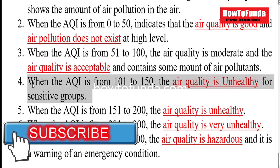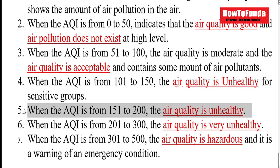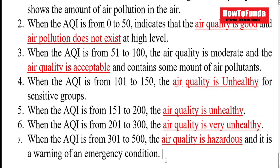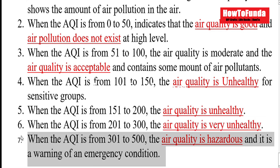When the Air Quality Index is 101 to 150, the air quality is unhealthy for certain sensitive groups of human beings. When it rises from 151 to 200, the air quality is very unhealthy even for normal human beings. When the Air Quality Index is from 201 to 300, the air quality is very unhealthy. When the Air Quality Index is from 300 to 500, the air quality is very hazardous and you should not live in that area, as it leads to a lot of emergency situations and challenges to health.